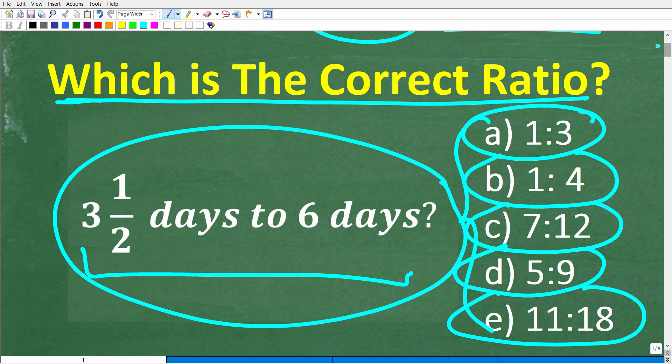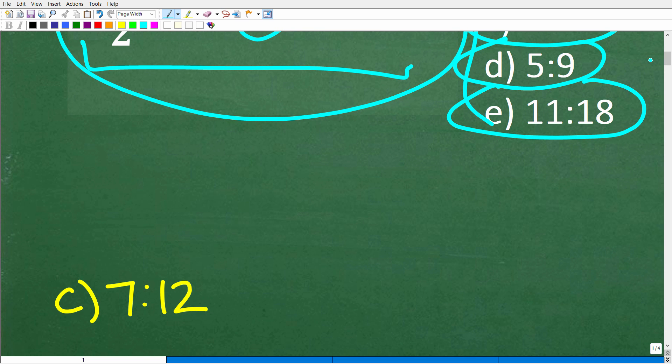Let's go ahead and take a look at the right answer here. What is the correct ratio of 3½ days to 6 days? The correct answer is C, which is 7 to 12. Now, if you got this right, that is excellent, but by no means is this an indication that you are fully prepared for this exam, as there is a lot of material. But if you didn't get this right, just use this as feedback. If you did get this right, that is fantastic.